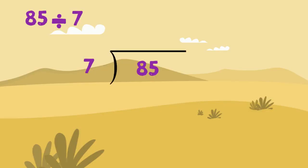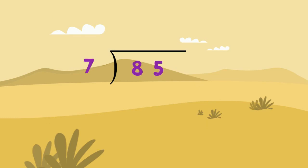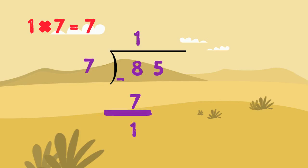Let's try another problem: 85 divided by 7. We need to see how many 7s make 85 or almost 85 — and remember, we always do digit by digit, starting from the left. Looking at number 8, we need to see how many 7s are in 8. From the 7s timetable, 1 times 7 equals 7, which is very close to 8. So 1 goes on top, we multiply 1 times 7 to get 7, write it under 8, and subtract: 8 minus 7 equals 1. Now we move to the next digit, 5, but we need to remember the remainder from our last step. We combine them by moving 5 down next to the remainder, making 15.